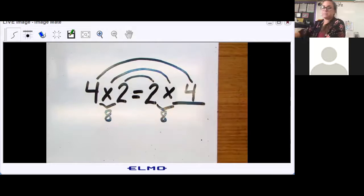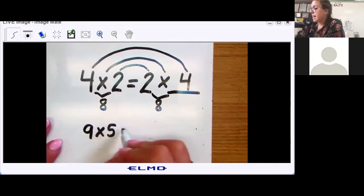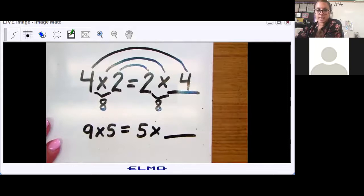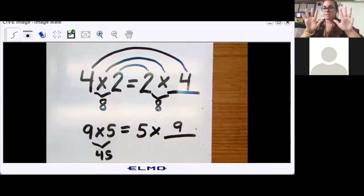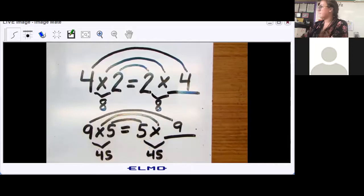All right, let's try another one just like that. I'm gonna leave that one up there. Nine times five equals five times blank. Take a second to fill that in. Nine - you should have gotten nine. Nine times five is 45. Nine fingers, count by five: five, 10, 15, 20, 25, 30, 35, 40, 45. And this should also equal 45. Six - they both have a five, they both have a multiplication sign, and they both have a nine.